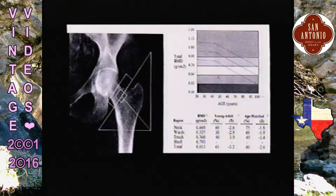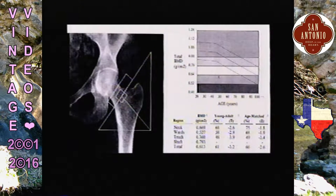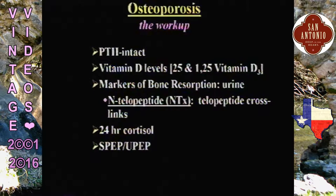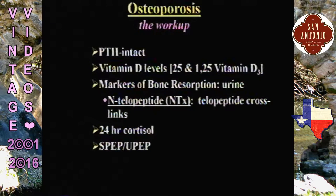Now what if a younger individual, around 46, comes in and her T-score is minus 3.2? She's real low. Yes, she went through premature menopause two years ago, but it should not have resulted in this degree of bone loss. So you really have to think of something else going on — a full workup with PTH, vitamin D, possibly SPEP and UPEP for myeloma, and a 24-hour urine cortisol if there's any suggestion of hypercortisolism. In this case, the patient had a vitamin D abnormality and malabsorption with secondary hyperparathyroidism, explaining the low bone density.